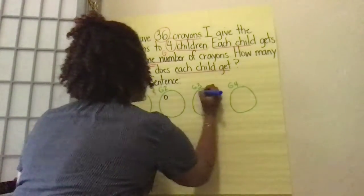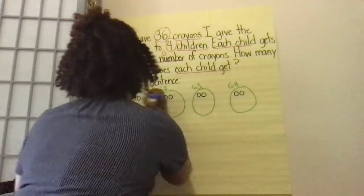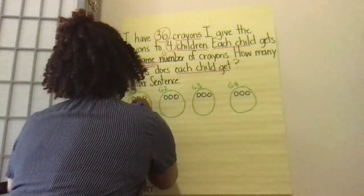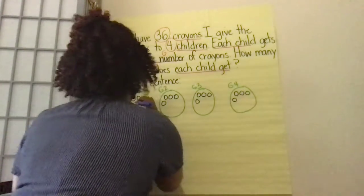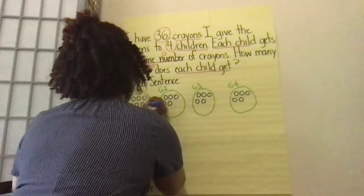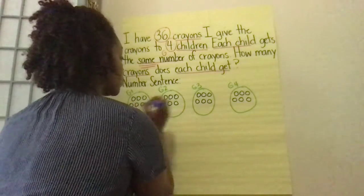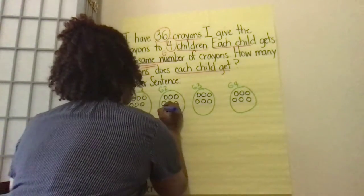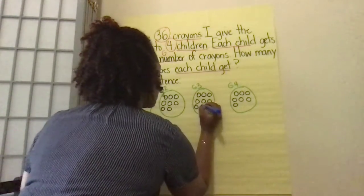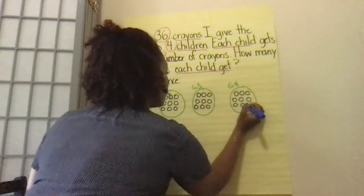Counting out one crayon at a time to each child in turn: 1, 2, 3, 4, 5, 6, 7, 8, 9, 10, 11, 12, 13, 14, 15, 16, 17, 18, 19, 20, 21, 22, 23, 24 — remember I'm stopping at 36 — 25, 26, 27, 28, 29, 30, 31, 32, 33, 34, 35, 36.